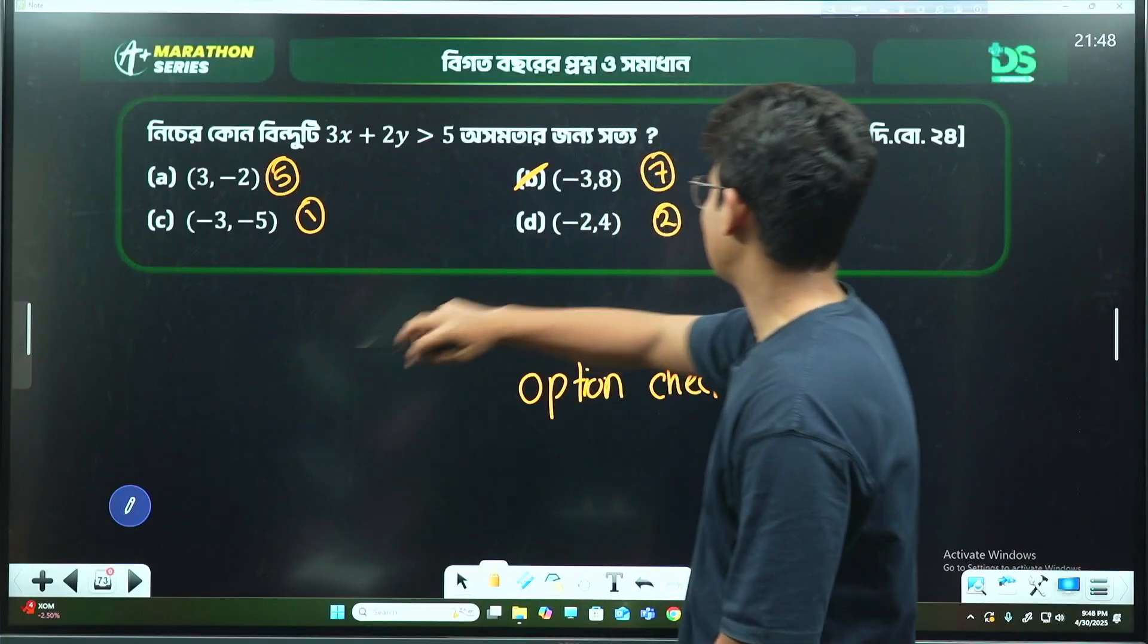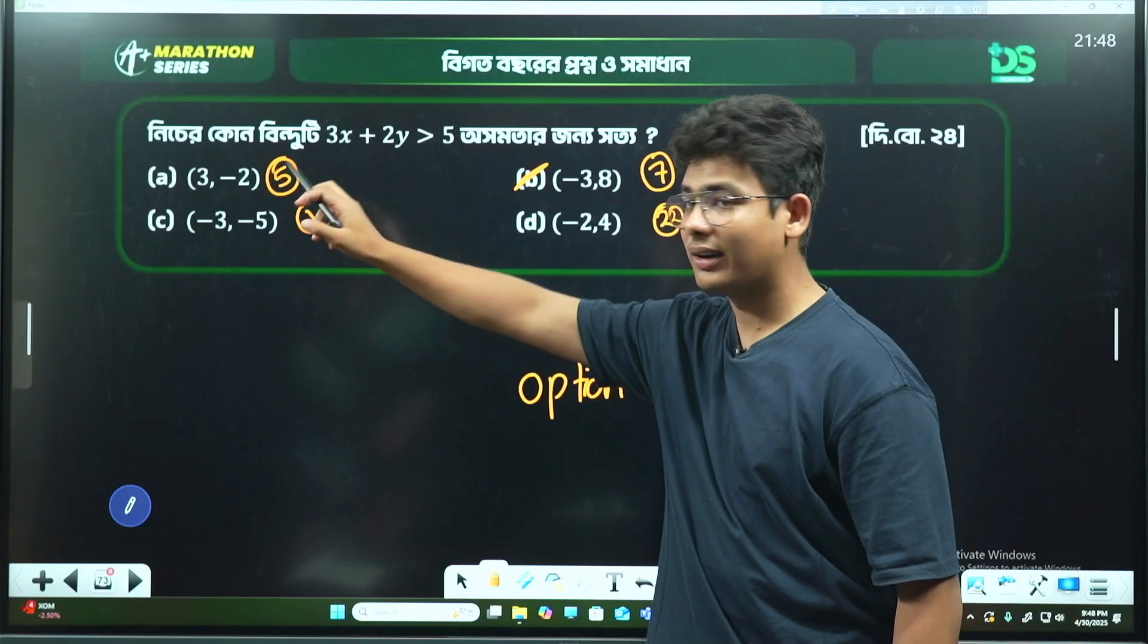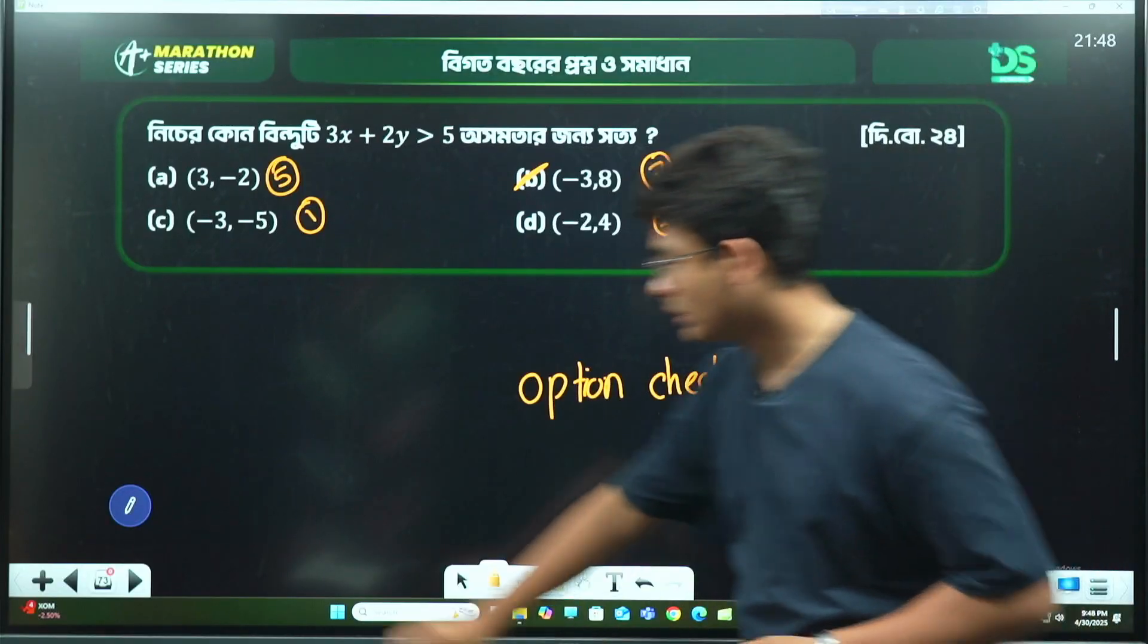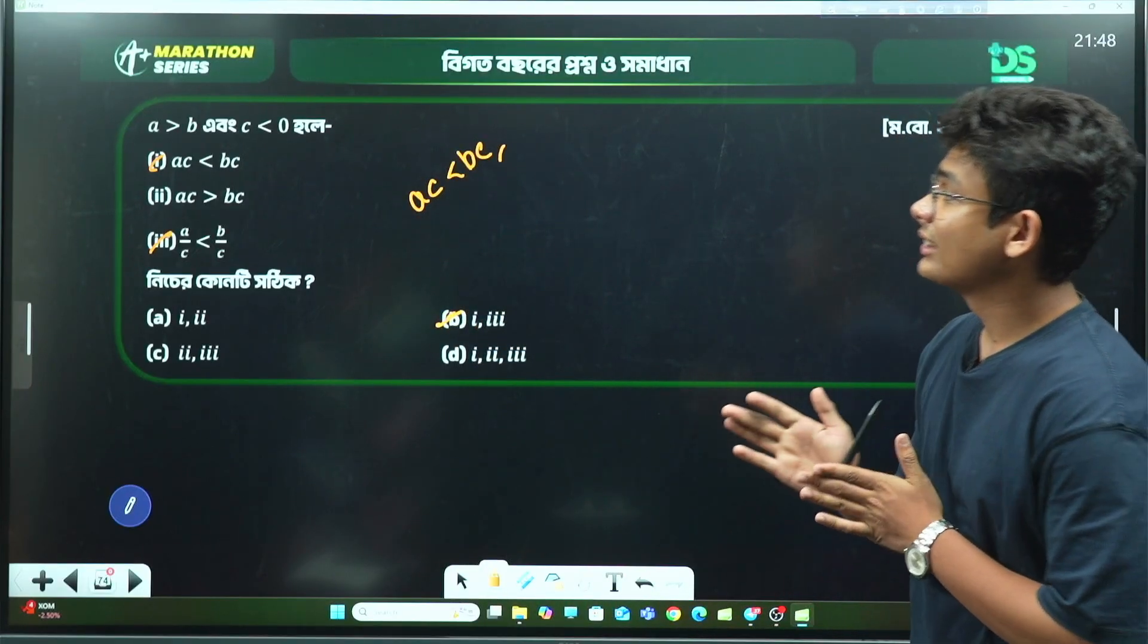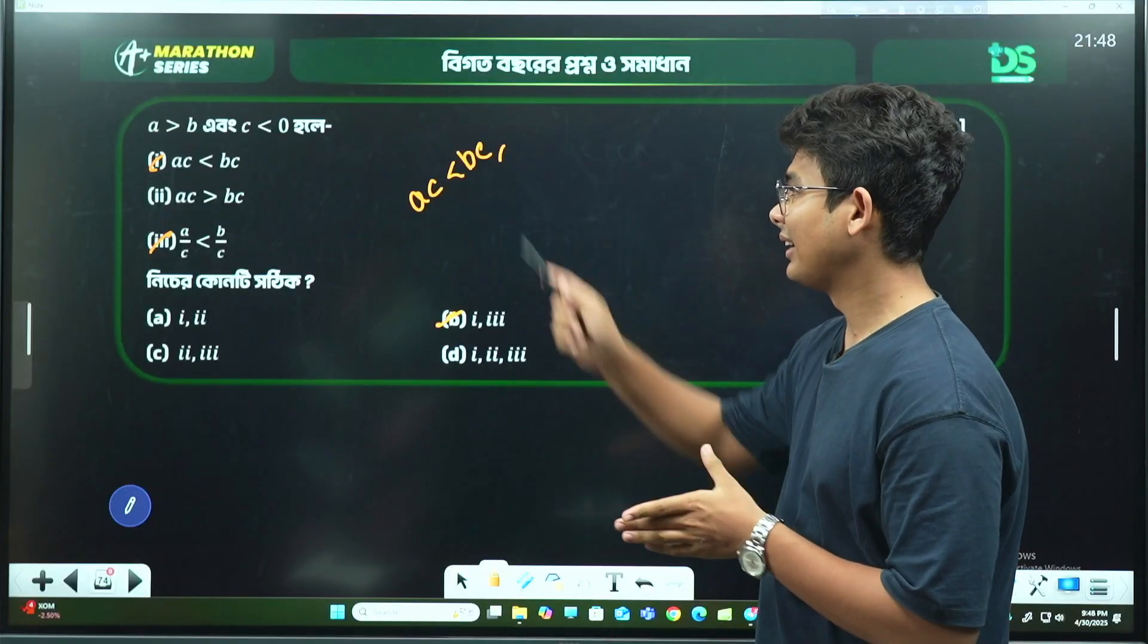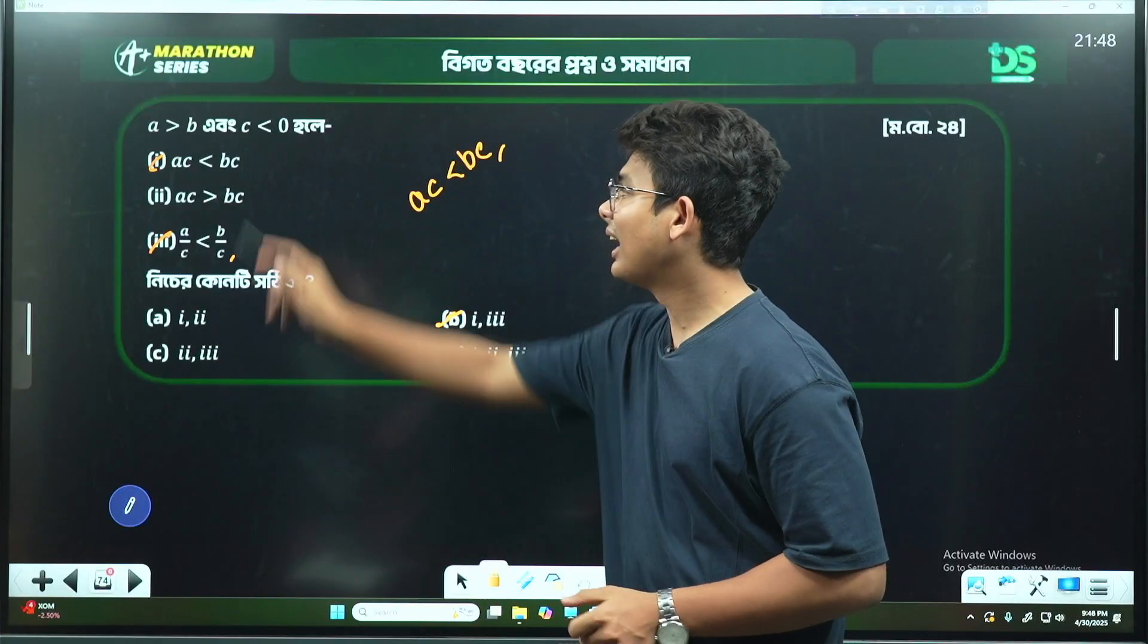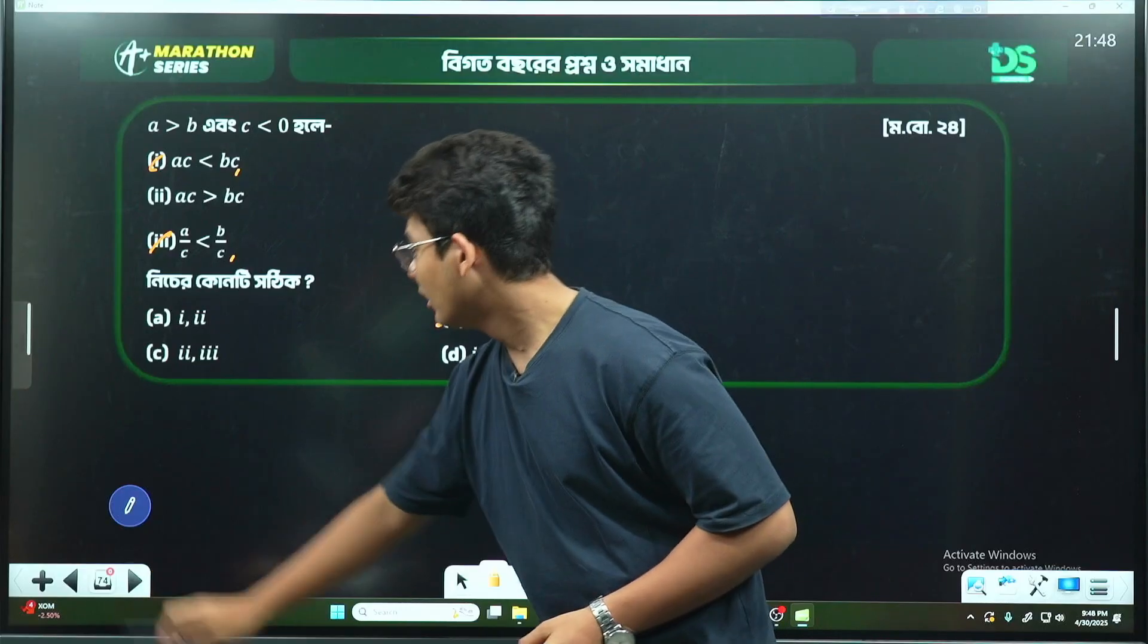Checking the options: if a > b and c < 0, then ac < bc. For example, if a = 5, then 5 > 5? No. 5 = 5? No. 5.0001 > 5? Yes. So the answer is ac < bc. This formula confirms: when a > b and c < 0, then a/c < b/c.